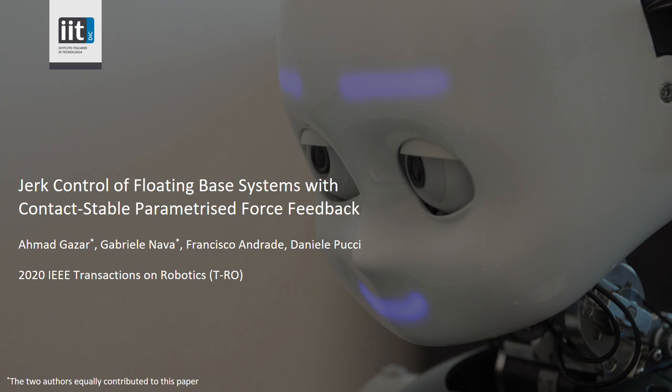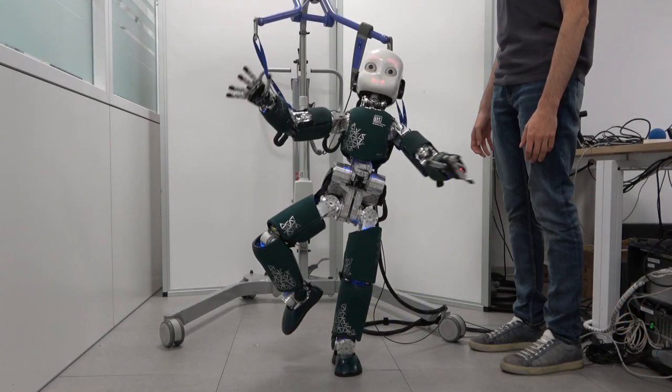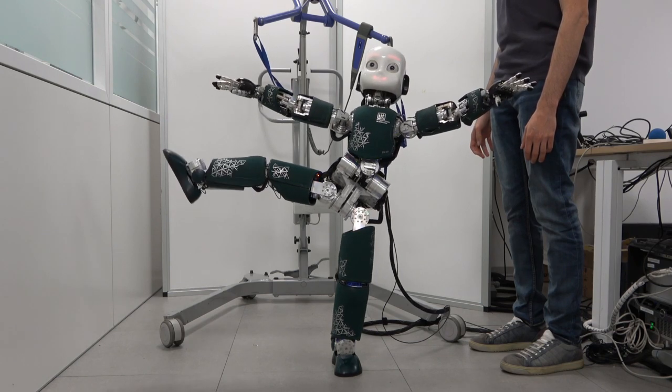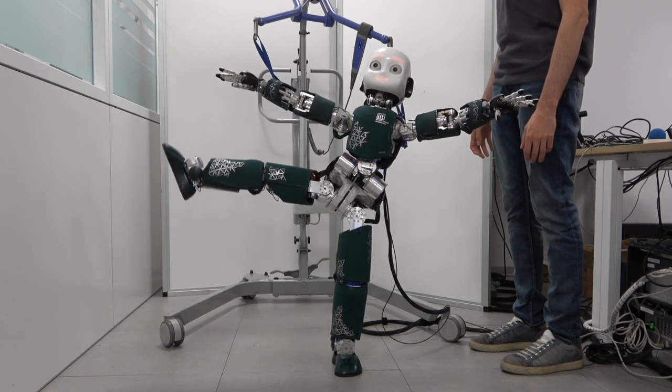This video presents the paper Jerk Control of Floating-Based Systems with Contact-Stable Parametrized Force Feedback, accepted for publication to Transactions on Robotics. In the paper we present a novel control architecture for humanoid robots, which allows our robot iCub to perform highly dynamic movements.